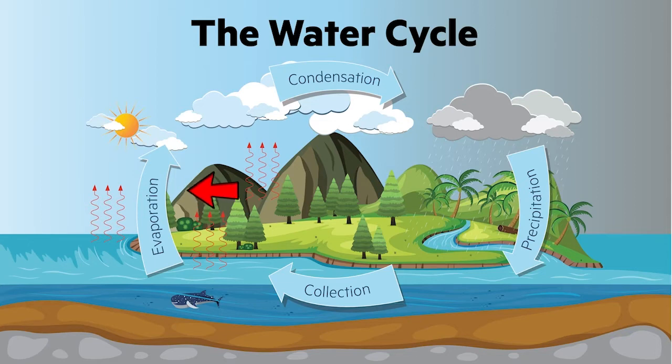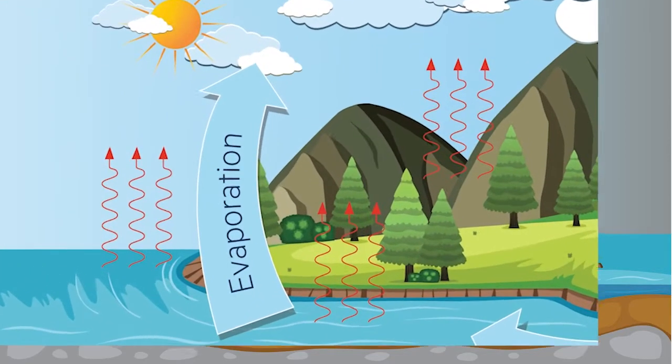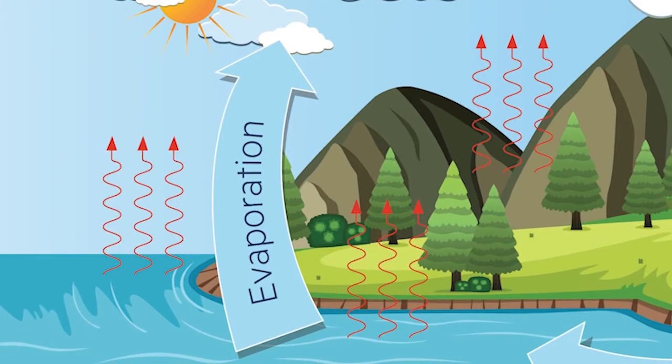Let's start with evaporation. Evaporation is when the Sun heats up groundwater. Remember what you know about matter — adding heat from the Sun makes the molecules begin to move faster and faster. The liquid turns into gas and the gas floats upward.